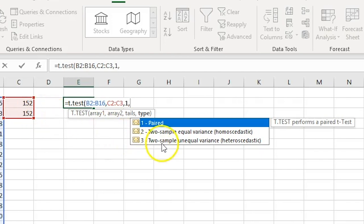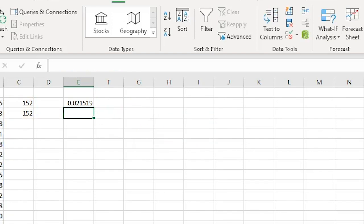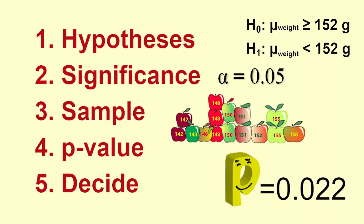Then 3 as this is two-sample unequal variance. And, hey presto, here is the p-value of 0.021519, which we will round to 0.022.